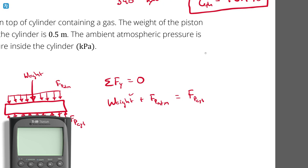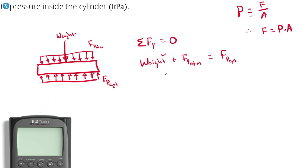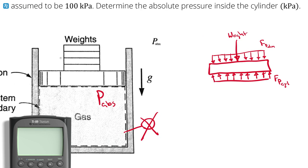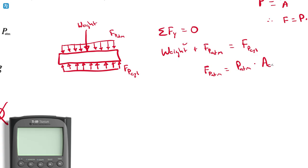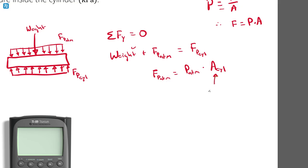The weight is known — that's 200 pounds. The force of the atmospheric pressure can be calculated because pressure is defined as force applied over area. So the force from atmospheric pressure equals the atmospheric pressure multiplied by the area over which it's applied. Since this is a cylinder, looking from the top it's a circle, so I need the area of that circular cross-section.